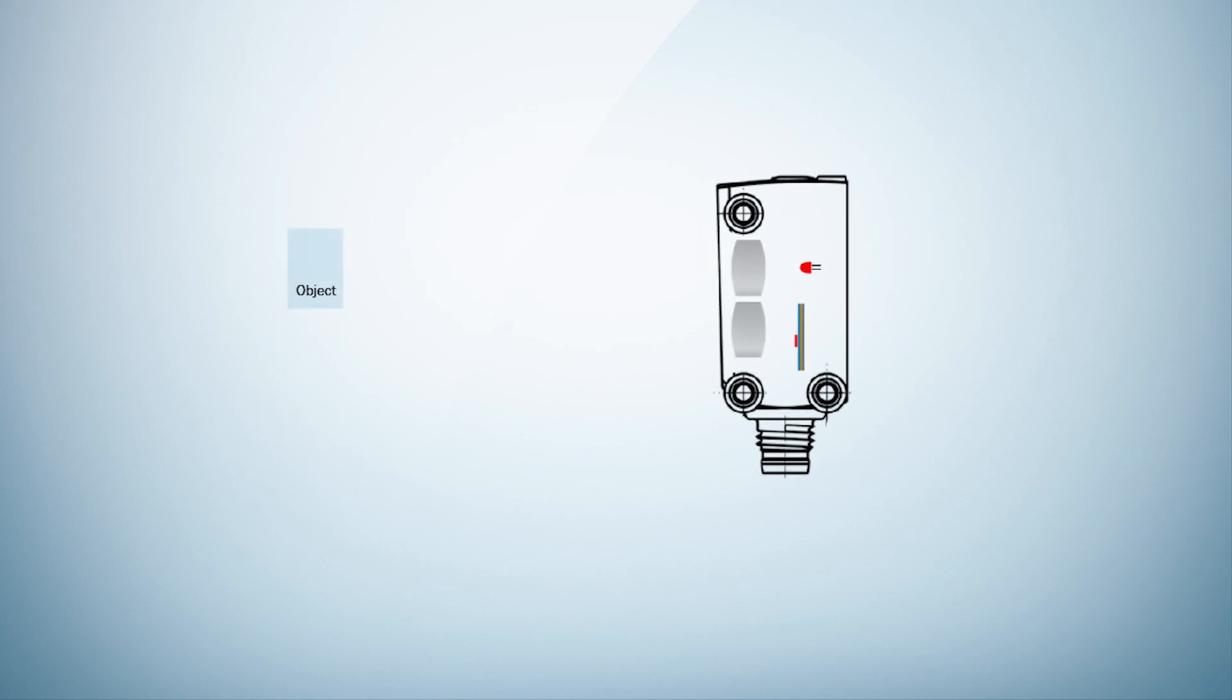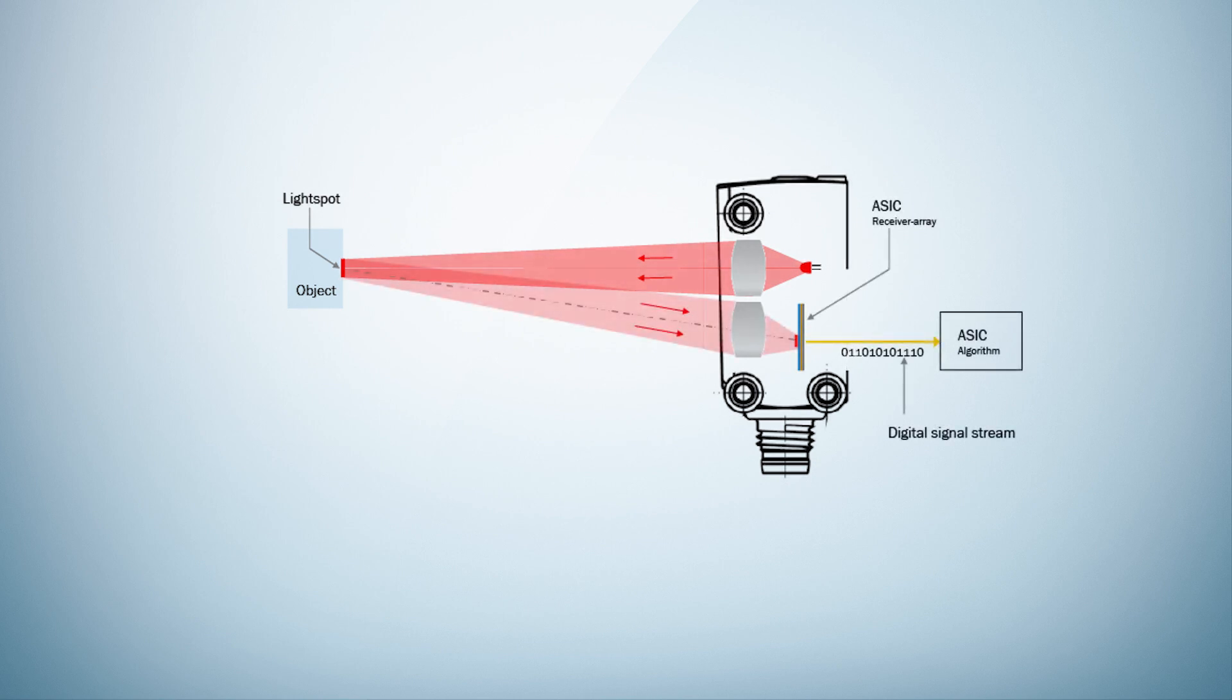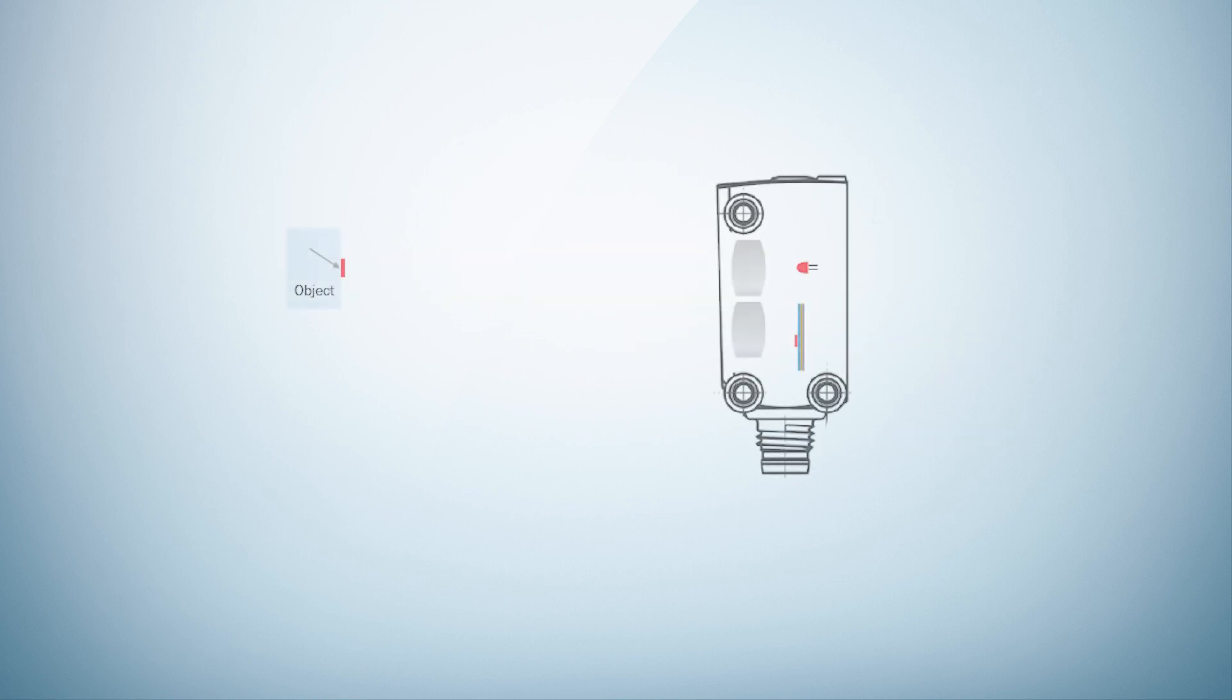In the sectional view of the W4S we see the operation of a photoelectric proximity switch with background suppression. With the pinpoint emitting LED and the emitting lens, a sharply defined light beam is generated which produces a light spot on an object. This light spot is imaged backwards by means of the receiving lens on the multipixel receiver array and it generates a photo current here. As already mentioned, this photo current is digitized directly at the pixel. The result is a digital signal current that can be evaluated with special algorithms.